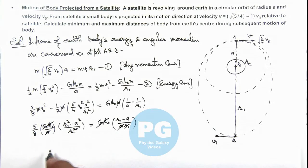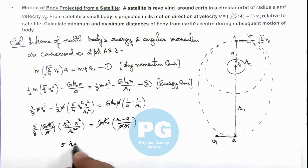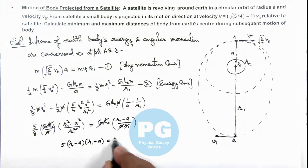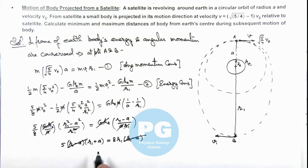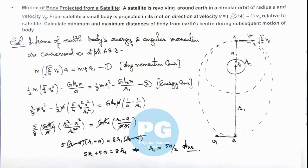Simplifying, we get: 5(r₁² − a²) = 8r₁(r₁ − a). Factoring the left side as 5(r₁ − a)(r₁ + a) = 8r₁(r₁ − a), the factor (r₁ − a) cancels out, giving 5r₁ + 5a = 8r₁. Therefore r₁ = 5a/3. This is the final result — the farthest distance of the body from the Earth's center during its elliptical motion is 5a/3.